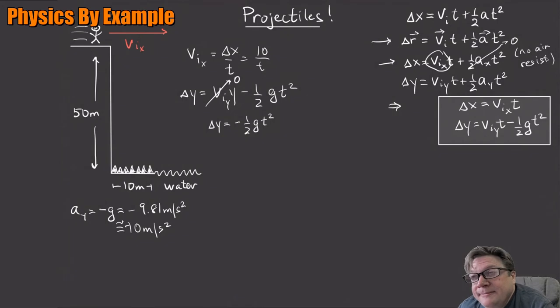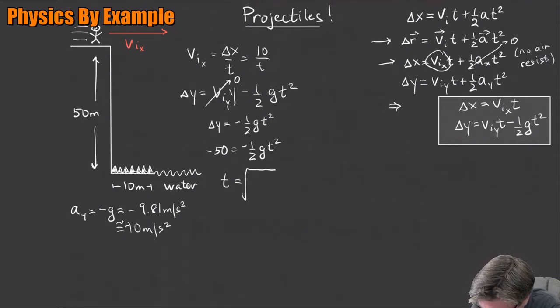We always separate projectile problems into X motion and Y motion. I need to solve for t, but this gets pretty easy. What is the initial speed in the Y direction? Zero - I'm going just horizontally. So delta Y is just minus one-half g t squared. Delta Y is minus 50, so minus 50 equals minus one-half g t squared. Now I can solve for t. The minus signs go away - we should never have a negative time. T is the square root of 2 times 50 over 10, which is 3.2 seconds to fall 50 meters.